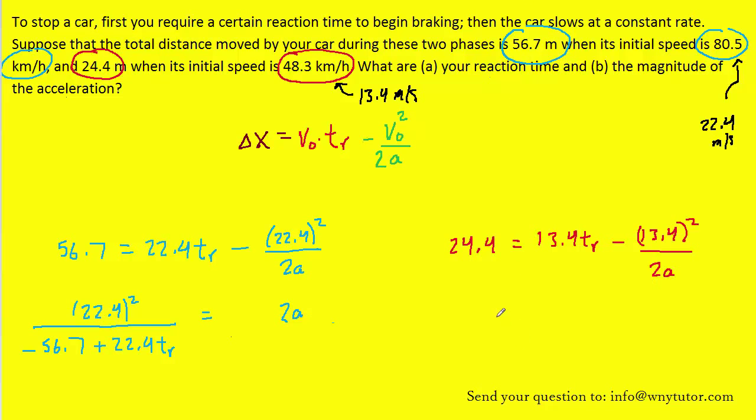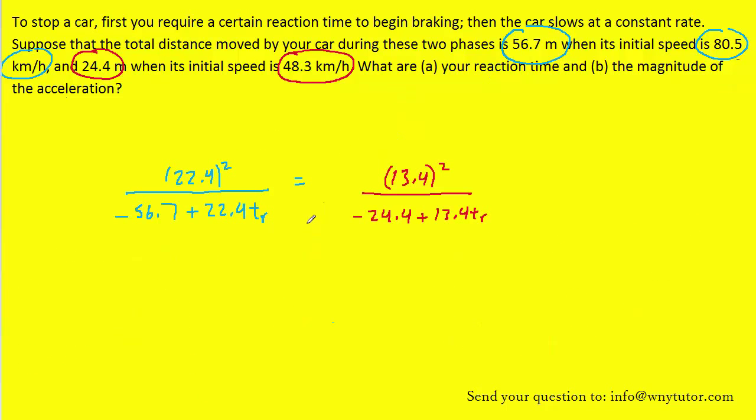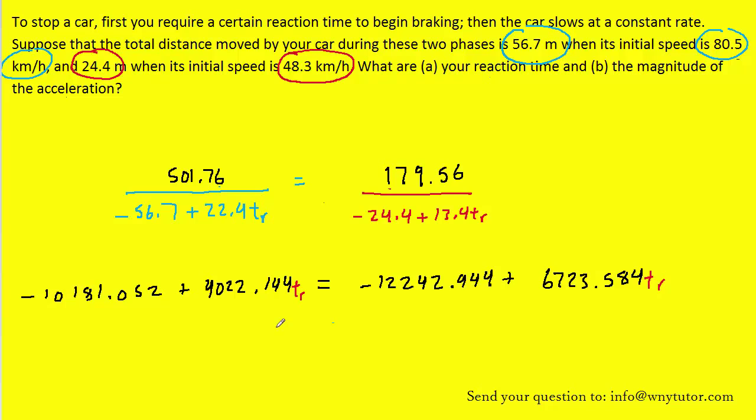Now that we have both equations in terms of 2a, we can equate them. We can set this equation equal to this one right here. Let's go ahead and square the numerators. We can then cross multiply. If you have any questions about that cross multiplying, please let me know in the comments.